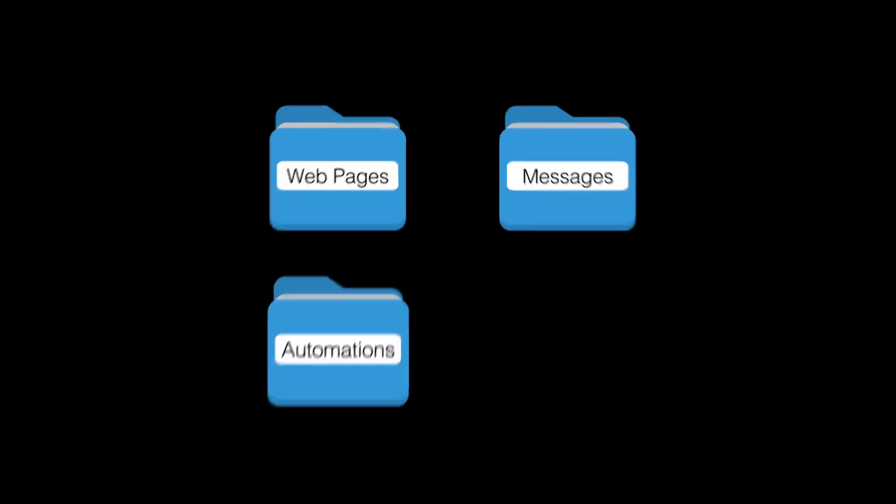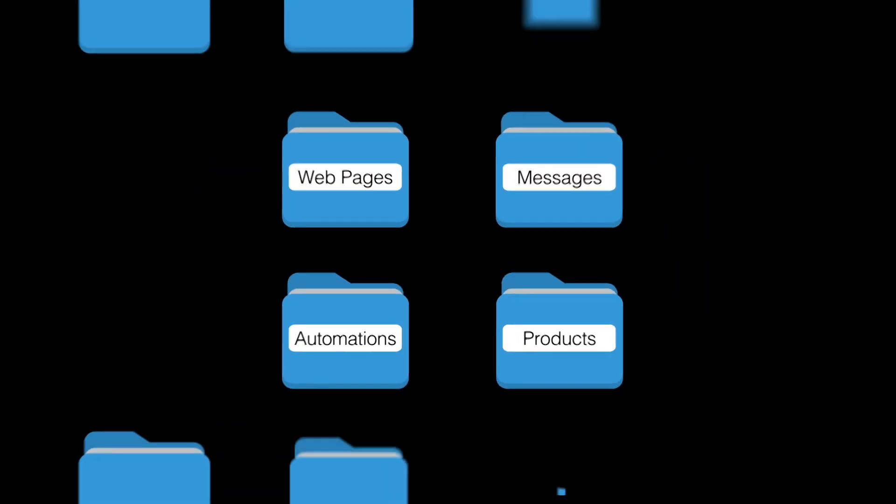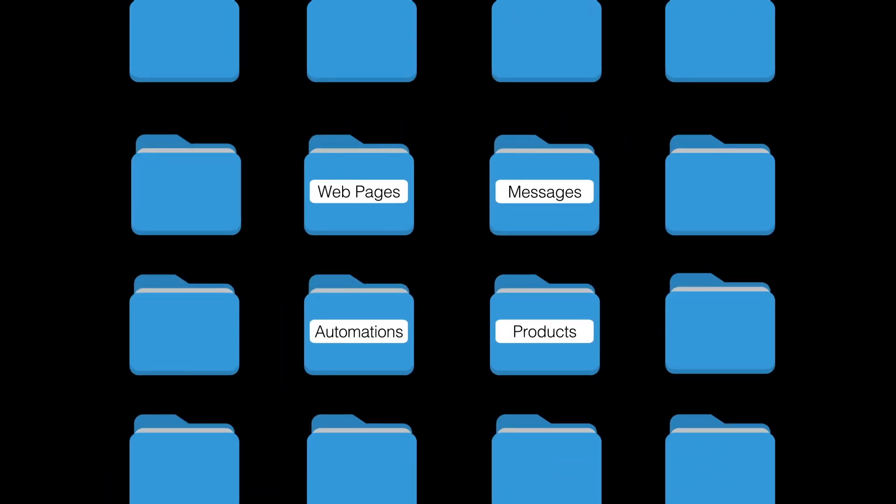At Ontraport, we think of systems as any process that you want to streamline or automate using the platform. Maybe it's a webinar lead capture and follow-up system, a new employee recruiting system, or a new client onboarding system. Whatever it is, it's going to be composed of a bunch of different assets like web pages, messages, automations, products, forms, and so on.